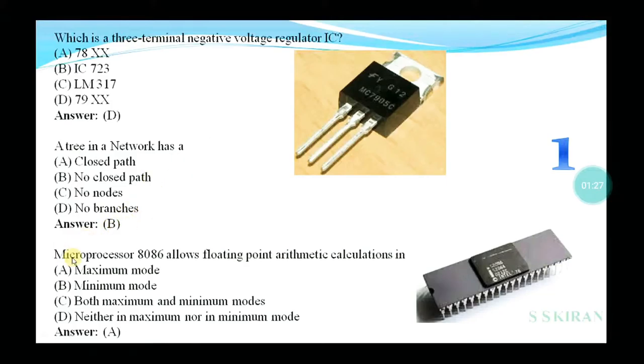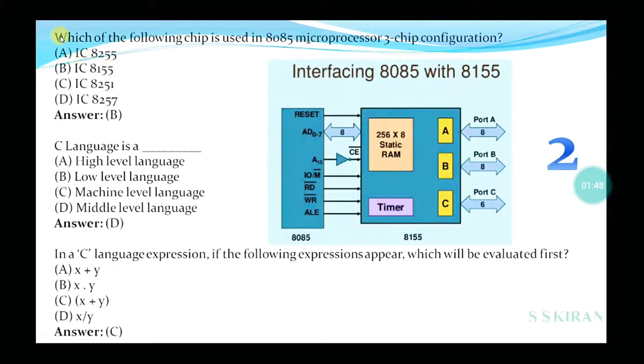A tree in a network has: closed path, no closed path, no nodes, no branches. Yes, option is no closed path. Microprocessor 8086 allows floating point arithmetic calculation in maximum mode, minimum mode, both maximum and minimum modes, or neither. The answer is maximum mode.